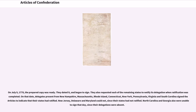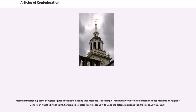On that date, delegates present from New Hampshire, Massachusetts, Rhode Island, Connecticut, New York, Pennsylvania, Virginia, and South Carolina signed the Articles to indicate that their states had ratified. New Jersey, Delaware, and Maryland could not, since their states had not ratified. North Carolina and Georgia were also unable to sign that day, since their delegations were absent. After the first signing, some delegates signed at the next meeting they attended. John Wentworth of New Hampshire added his name on August 8. John Penn was the first of North Carolina's delegates to arrive on July 10, and the delegation signed the Articles on July 21, 1778.